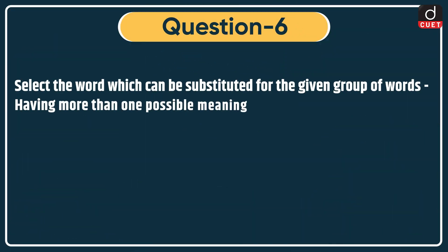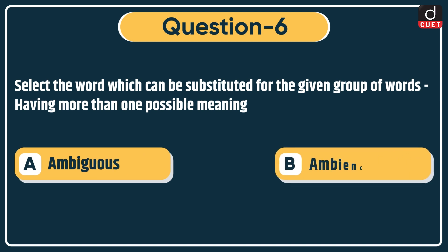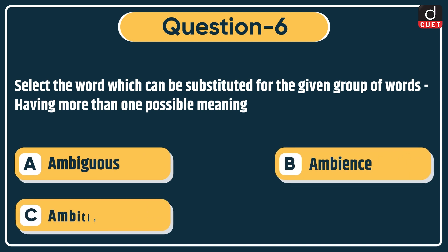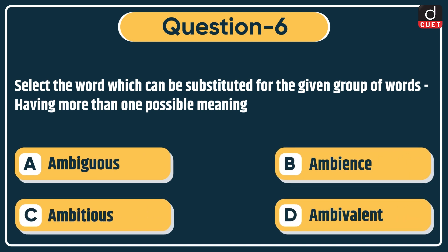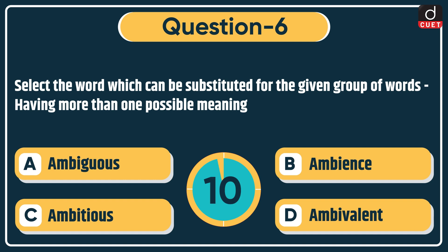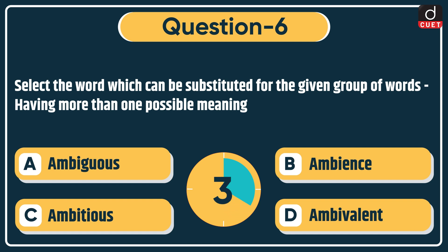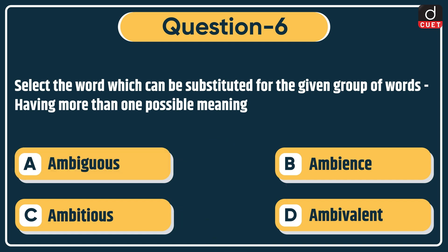Next question: select the word which can be substituted for the given group of words — 'having more than one possible meaning.' Options: ambiguous, ambience, ambitious, or ambivalent. The correct answer is option A: ambiguous.